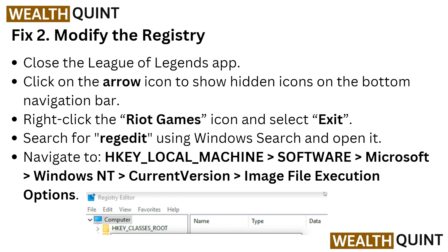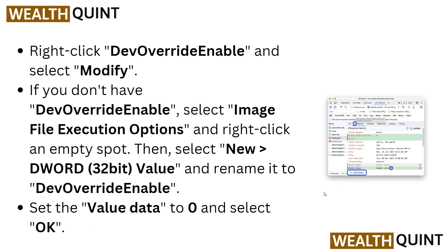Navigate to HKEY_LOCAL_MACHINE > SOFTWARE > Microsoft > Windows NT > CurrentVersion > Image File Execution Options. Right-click on the Developer Override Enable entry and select Modify. If you don't have a Developer Override Enable entry, right-click on the empty spot, select New > DWORD (32-bit) Value, and rename it to Developer Override Enable.